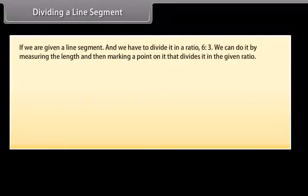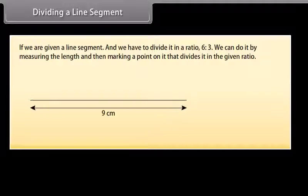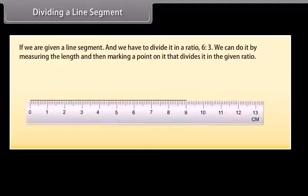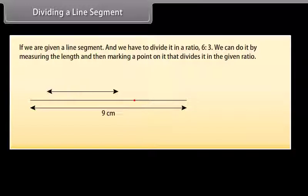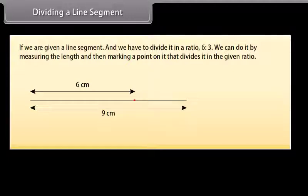If we are given a line segment and we have to divide it in a ratio 6 is to 3, we can do it by measuring the length and then marking a point on it that divides it in the given ratio. But suppose that we do not have any way of measuring it precisely. So we will use constructions to divide a line segment in a given ratio. Let's learn.